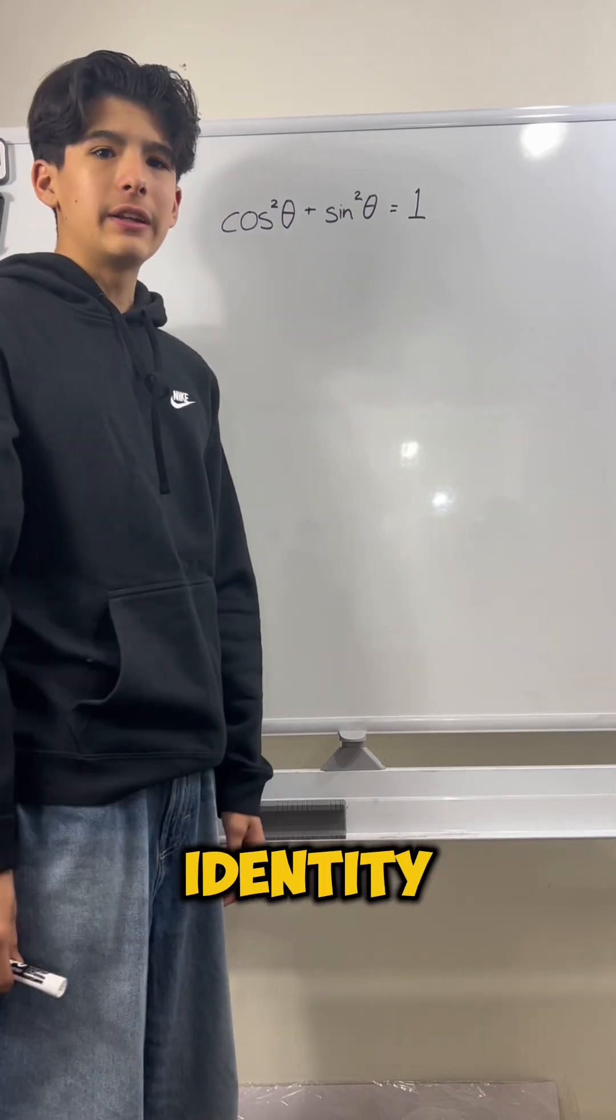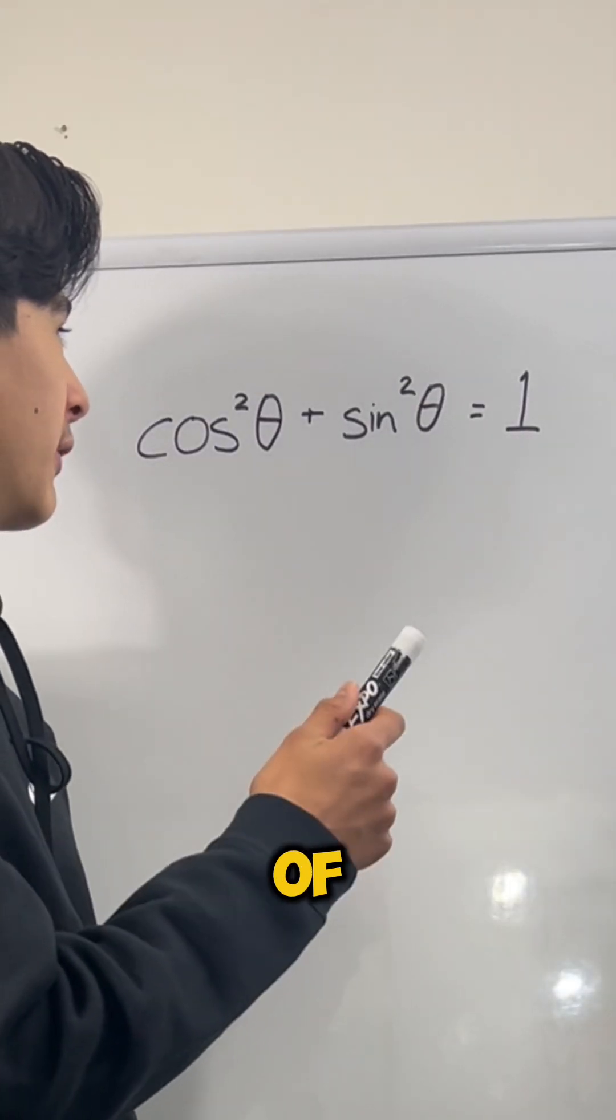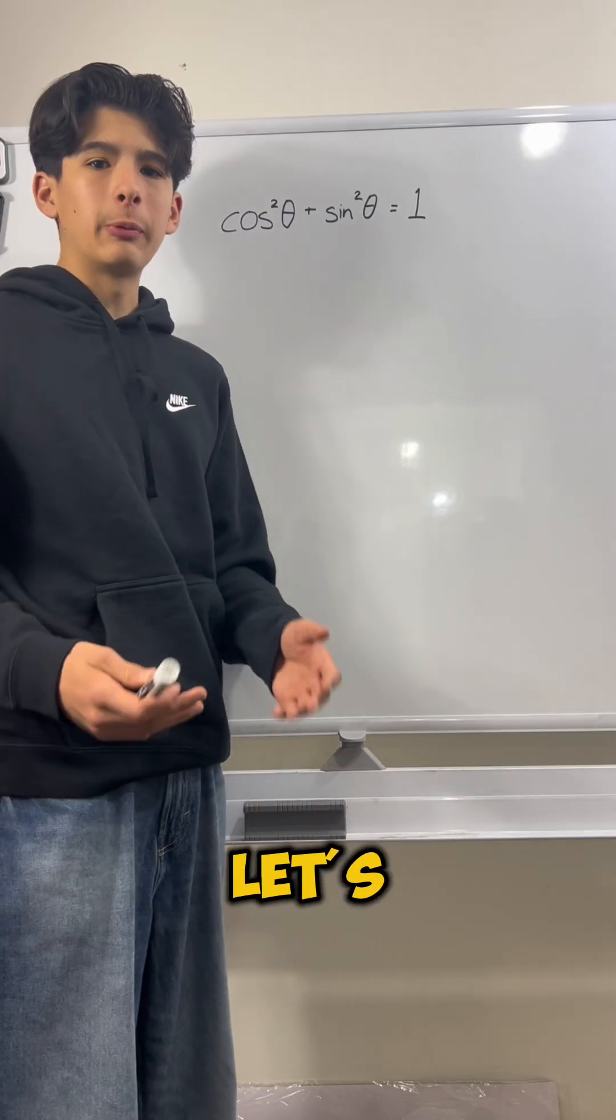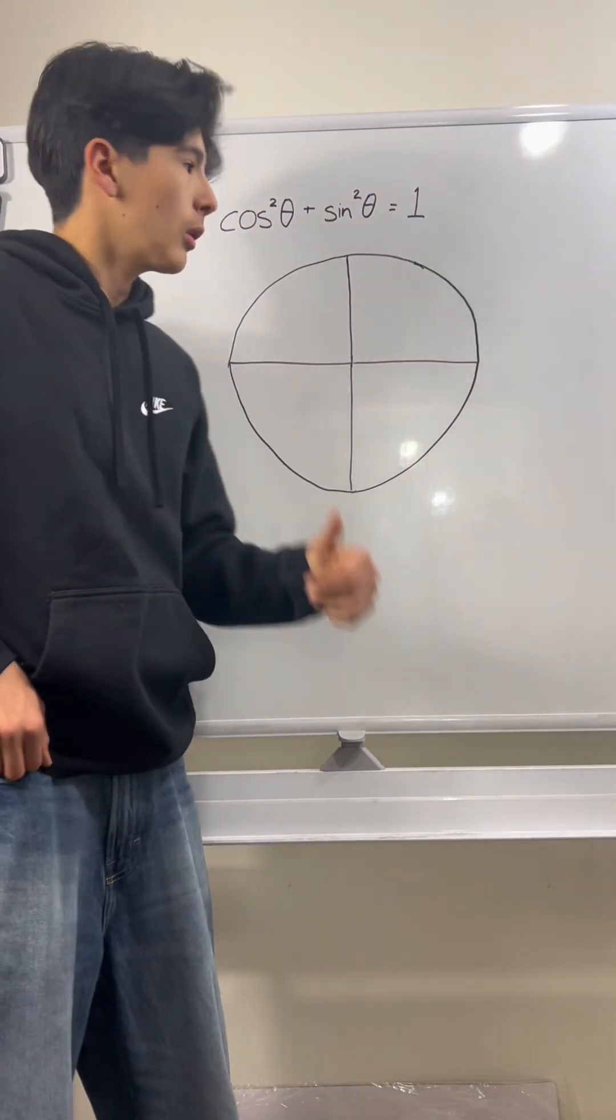The Pythagorean identity says that cosine squared of theta plus sine squared of theta should equal 1. Let's bring out something really handy: a unit circle.